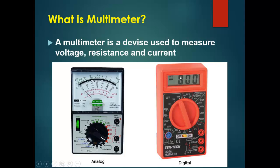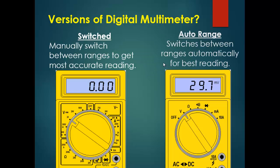The digital multimeter shows the measured value in alphanumeric digits on the LCD. There are two versions of digital multimeter. The first one is the switch type, which is a manual multimeter, and we have to manually select between the ranges of different functions.